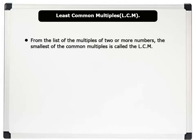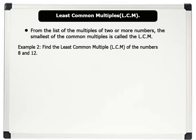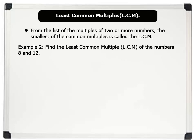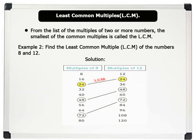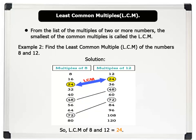From the list of multiples of two or more numbers, the smallest of the common multiples is called the LCM. Let us see an example. Find the least common multiple of the numbers 8 and 12. Solution: first, we list the multiples of the numbers 8 and 12 as shown on the board. Notice that 24, 48, and 72 are common to both numbers. However, the smallest of the common multiples is 24. Therefore, the least common multiple of the numbers 8 and 12 is 24.